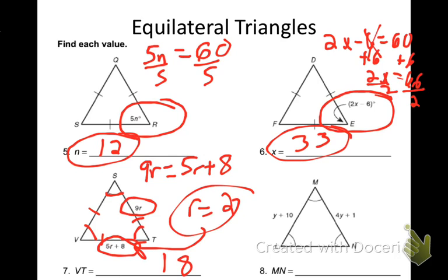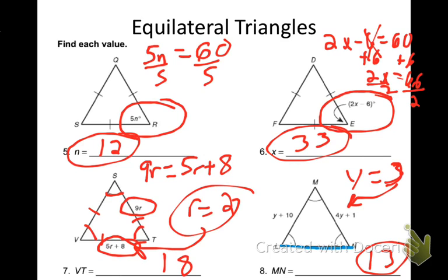Try number 8 on your own. y equals 3. Plug it back in and you get the side length to be 13. Since it's equilateral, MN is 13 — and therefore LN is also 13, because all sides of an equilateral triangle are congruent.